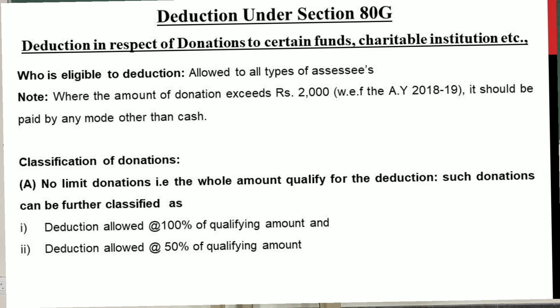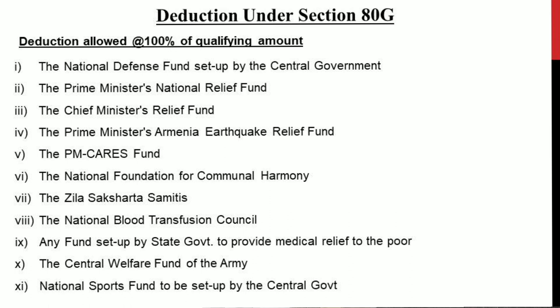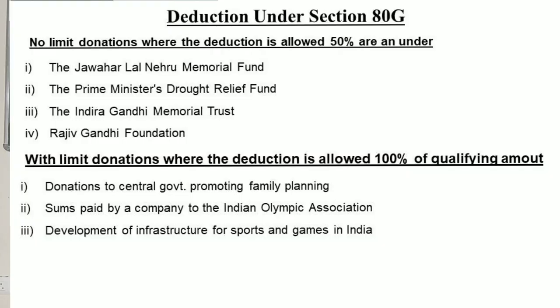Donations qualifying for 100% deduction with no limit include: National Defense Fund set up by Central Government, Prime Minister's National Relief Fund, Chief Minister's Relief Fund, Prime Minister's Armenia Earthquake Relief Fund, PM CARES Fund, National Foundation for Communal Harmony, Zila Saksharta Samiti, National Blood Transfusion Council, any fund set up by state government to provide medical relief to the poor, Central Welfare Fund of the Army, and National Sports Fund set up by Central Government.